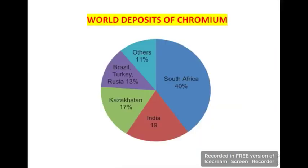In this chart you can see chromium deposits in the world. South Africa has the largest deposits of chromium in the world at 40 percent. Clockwise, you can see the percentages in other countries.